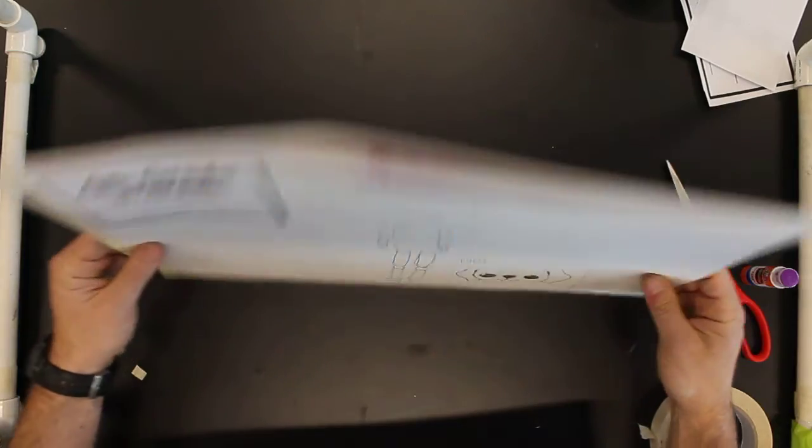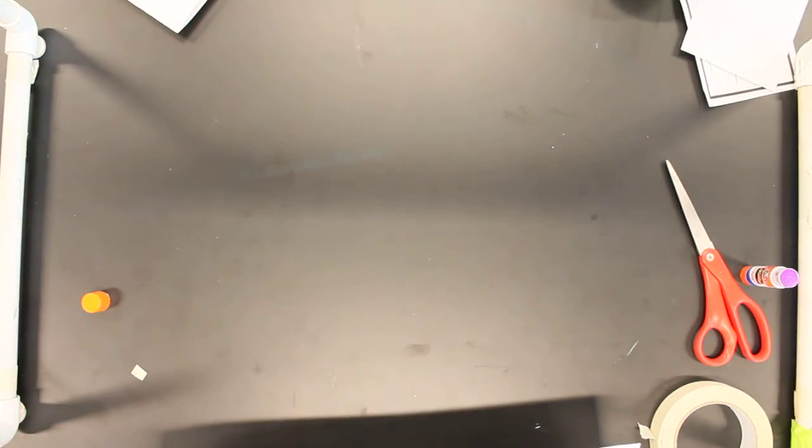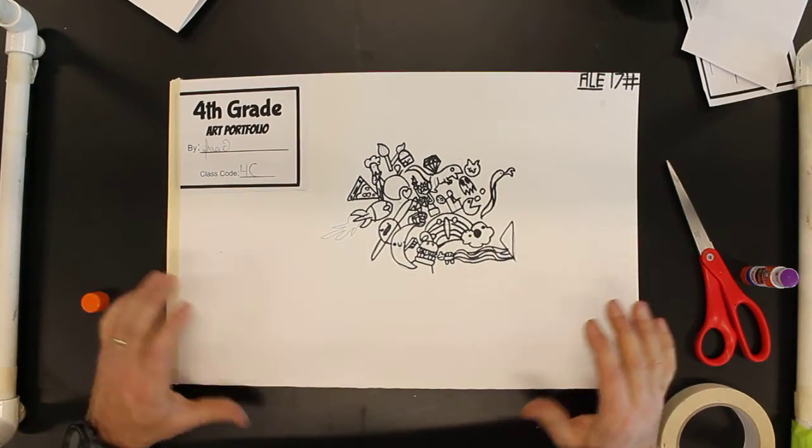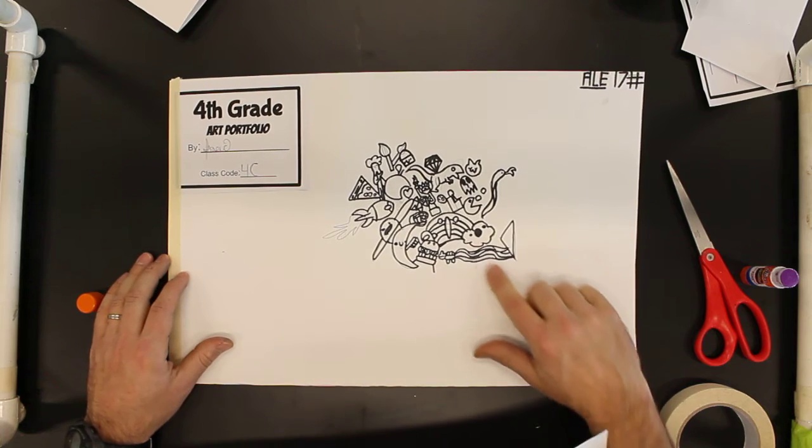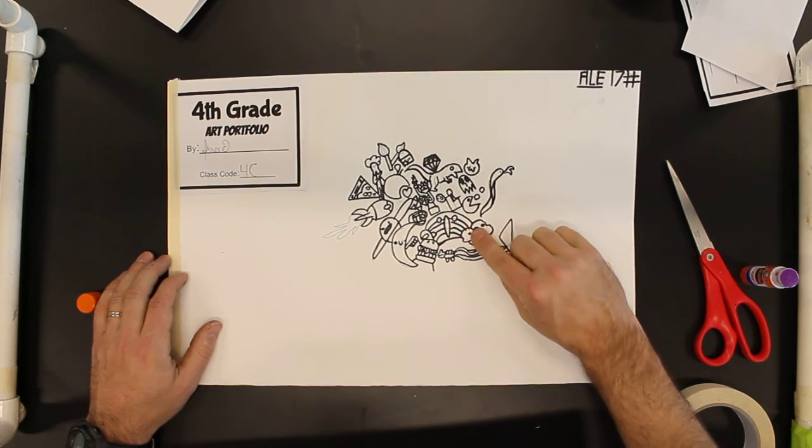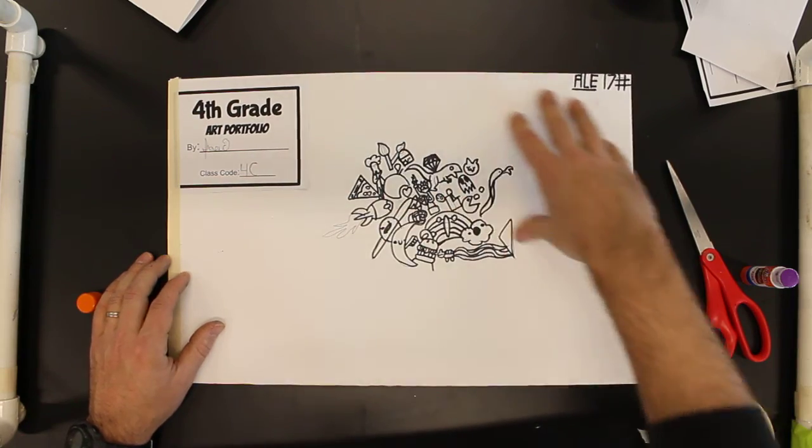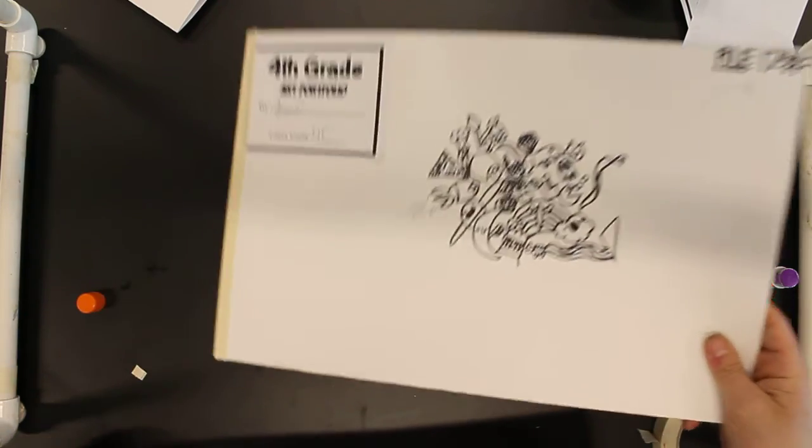This one is Isaac, also from 4C. He's just doing a bunch of smaller images. He found these on his Chromebook - he was looking at different ideas and he was just going to fill it up with all these cool ideas. So that's a really cool start there for Isaac.